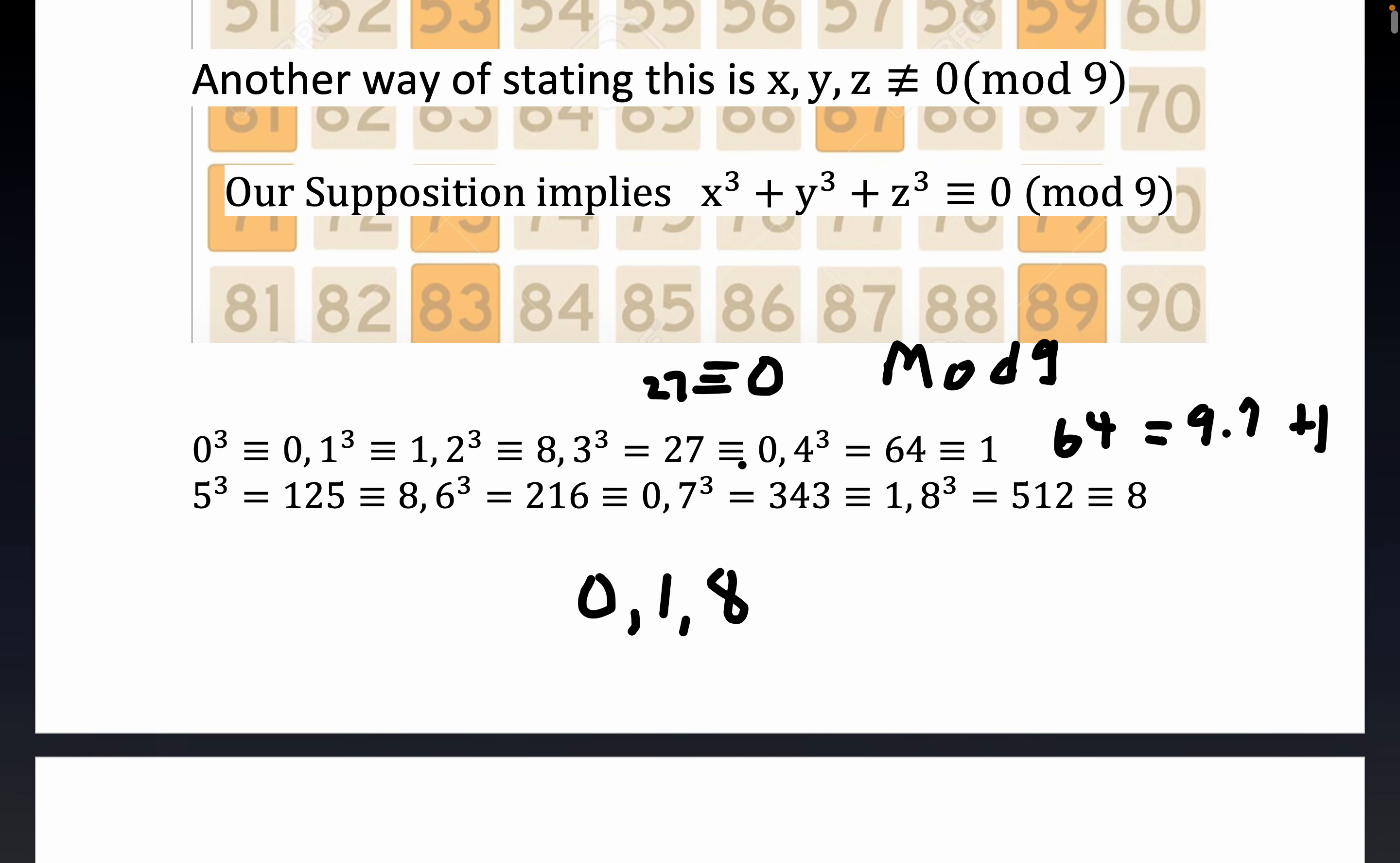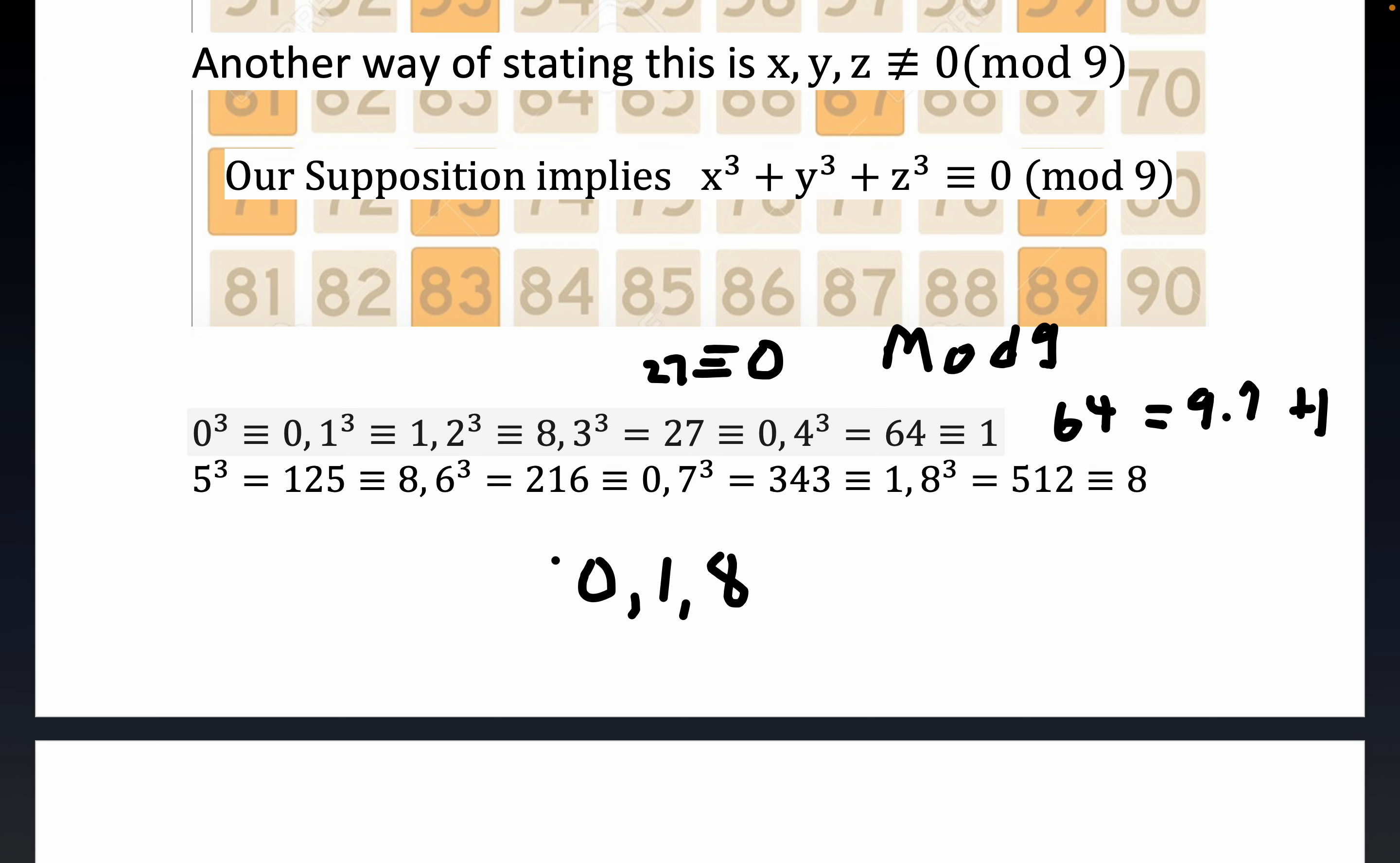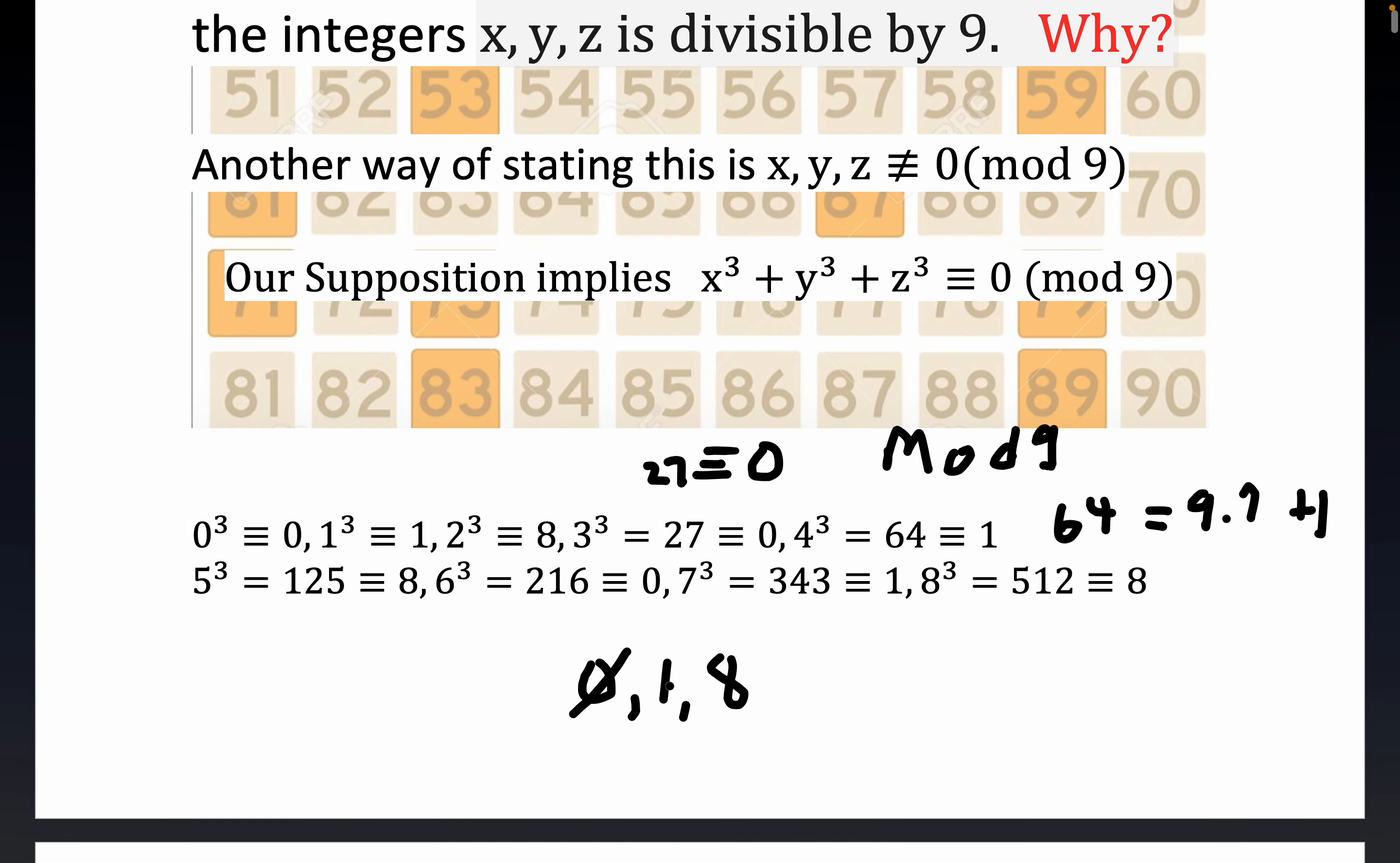But notice that we're claiming that we can't allow for 0. That's the assumption here. We're assuming that none of the integers is divisible by 3, so we have to rule out the congruent to 0 piece, right? So the only possibilities here are just 1 and 8. You see, 0 was ruled out by our assumption, our contradiction assumption. So the only possibilities would be 1 and 8.